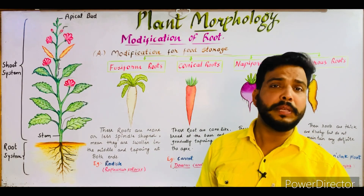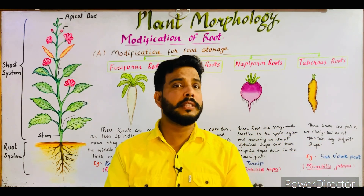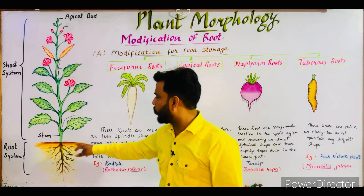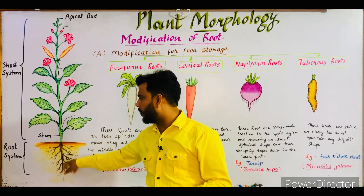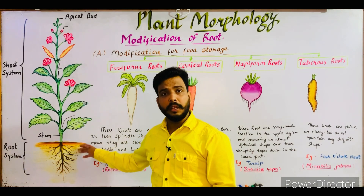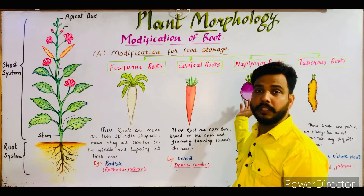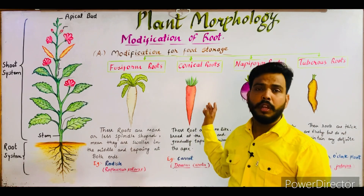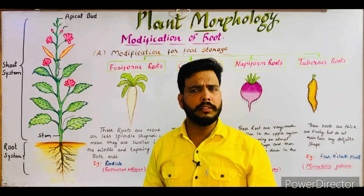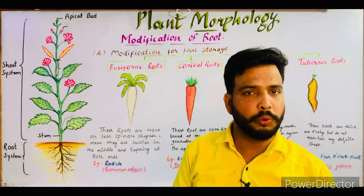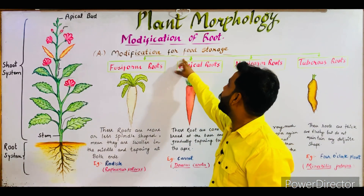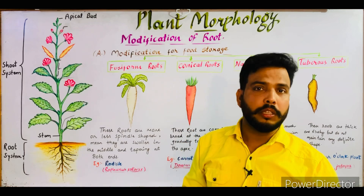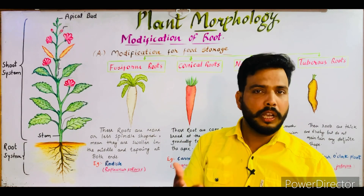First of all, what is modification? Modification means to change the shape, size, and function of the root — that is known as modification. As you can see in this diagram, roots generally appear in a simple form, but sometimes they may appear in modified ways. There are different reasons to modify the root. In this lecture I will tell you the modification for food storage — when the root stores food, it gets modified.